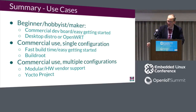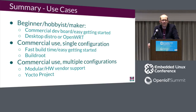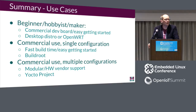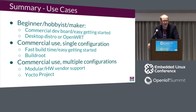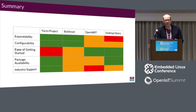Just a few use case recommendations — your mileage may vary. If you're a beginner, hobbyist, or maker using something like a Raspberry Pi, a desktop distro might be a good choice — most maker blogs start with Debian. For commercial use with a single configuration, Buildroot is a good option. For commercial use with multiple configurations, the Yocto Project might be a better choice because of how it allows layering things on top of each other. There's no right answer for everybody — these are just general ideas to consider as you move forward with your system design.